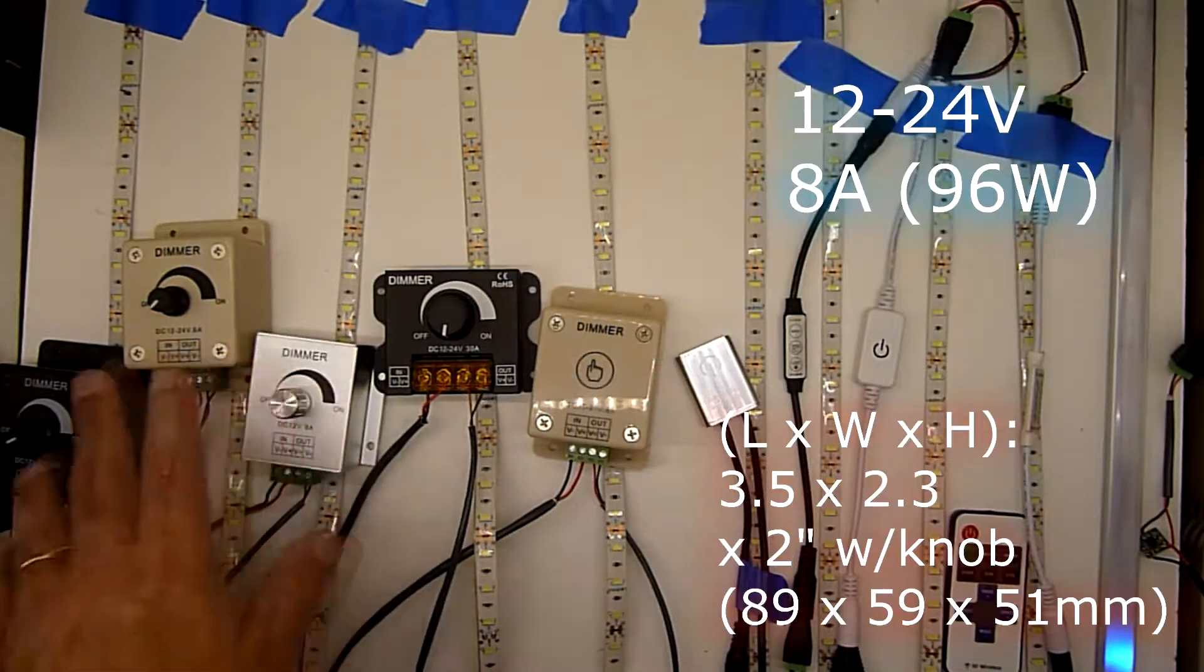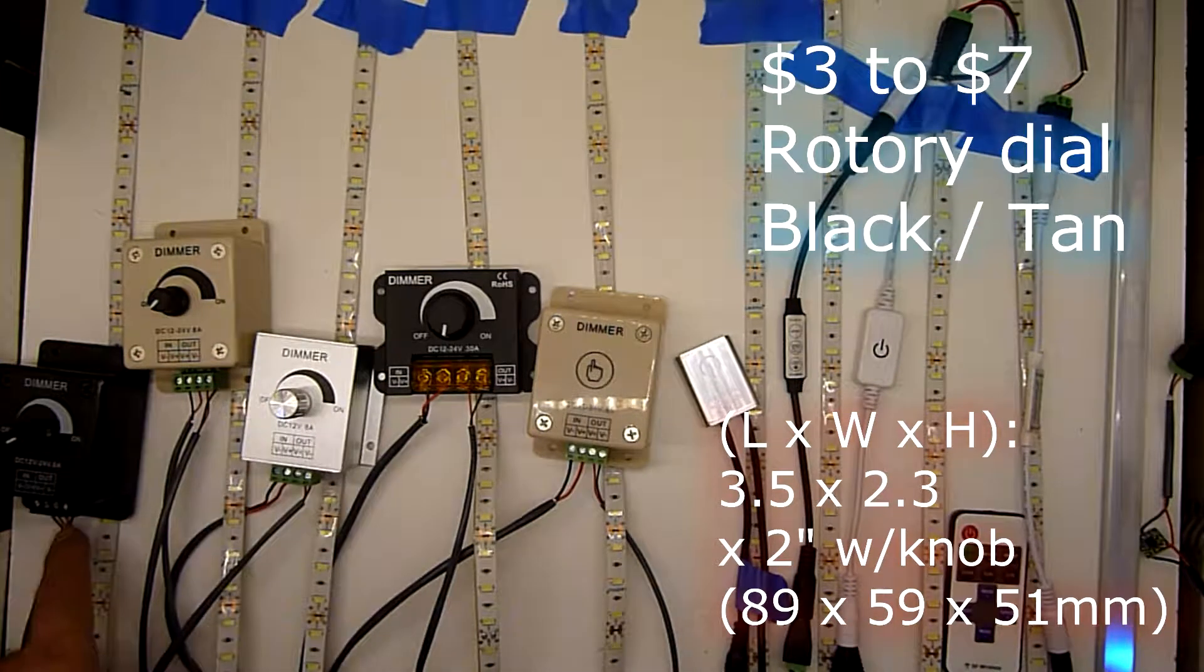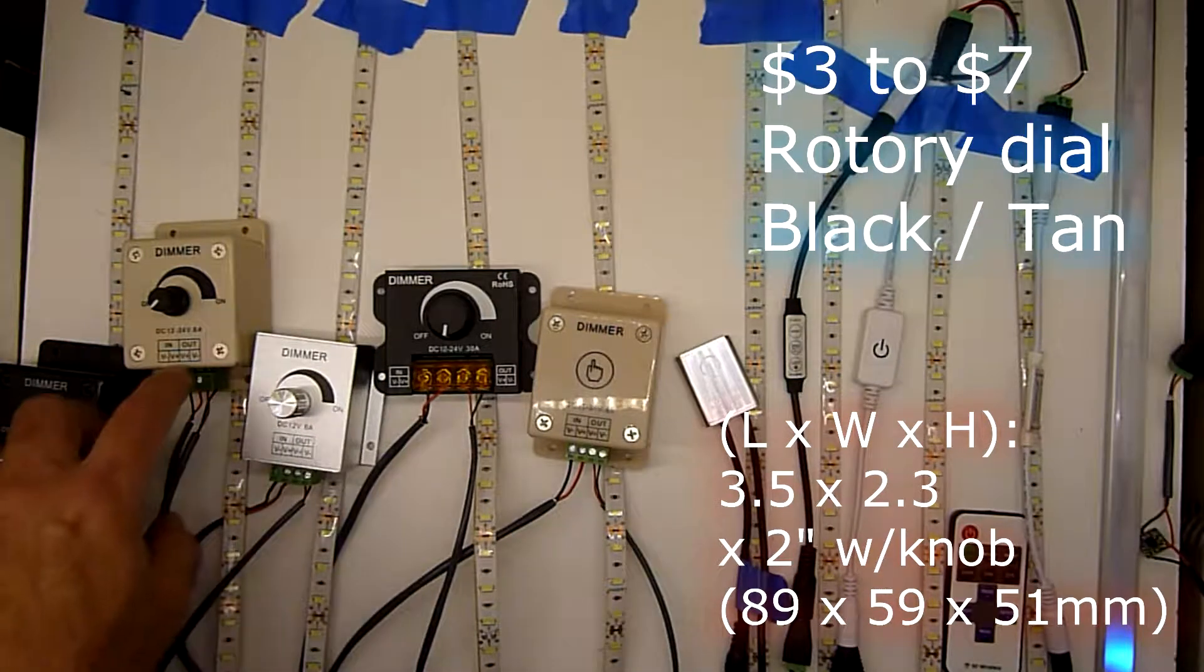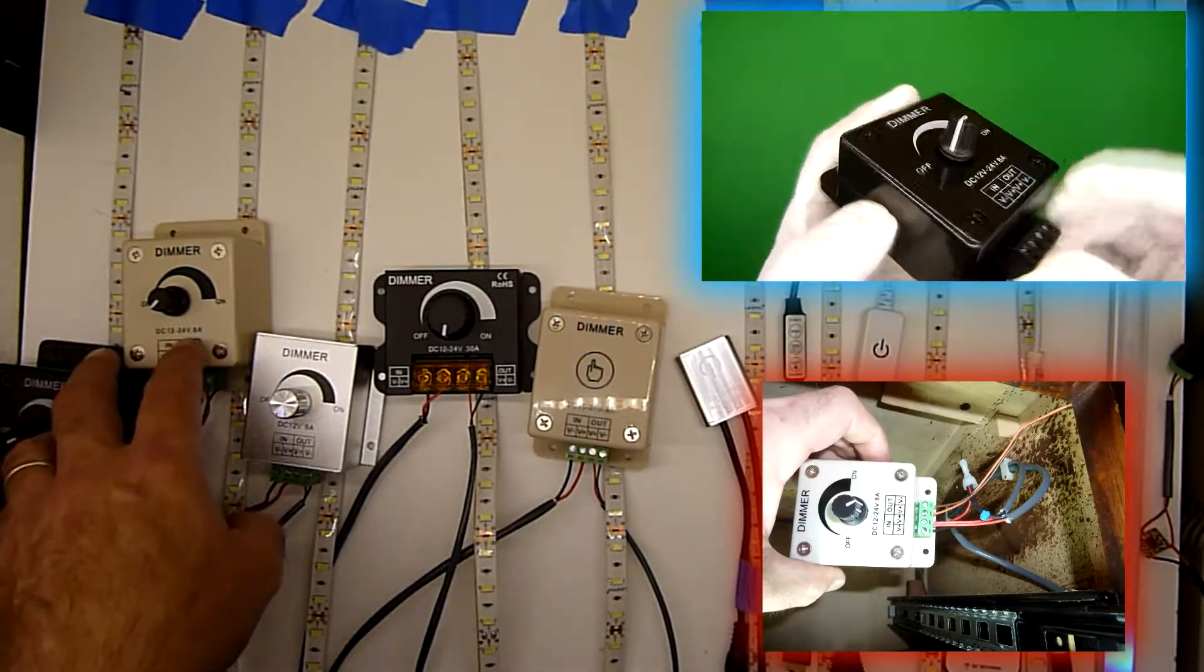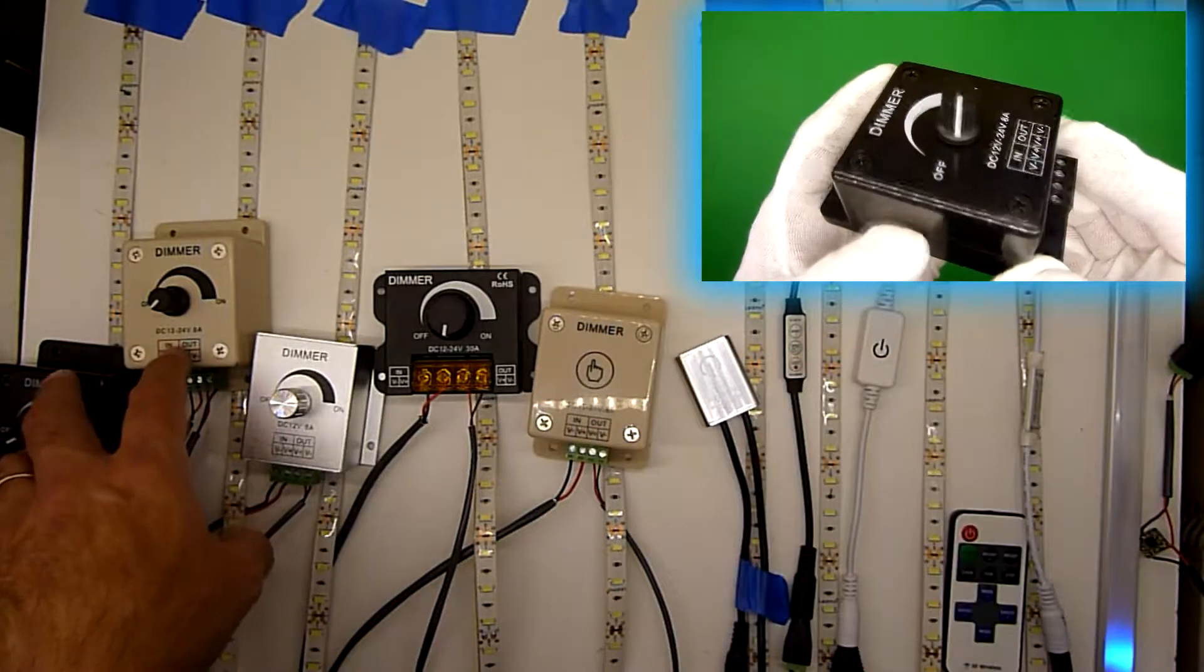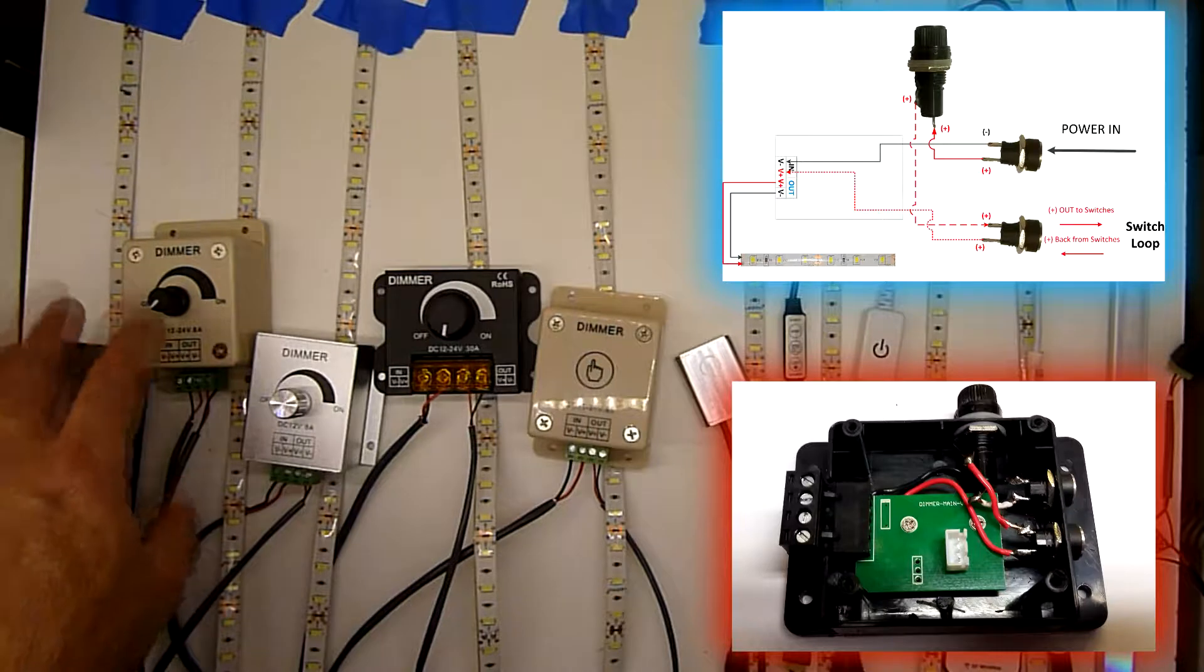This tan one drops off right away, and this black one can hover pretty low and you'll see the flickering there that it's trying to give you the illumination of the lower light. Flicker is something we'll talk about as we go through all these. These particular units are rated at 12 to 24 volt, 8 amp.